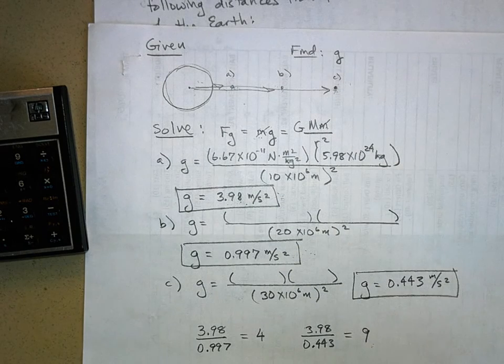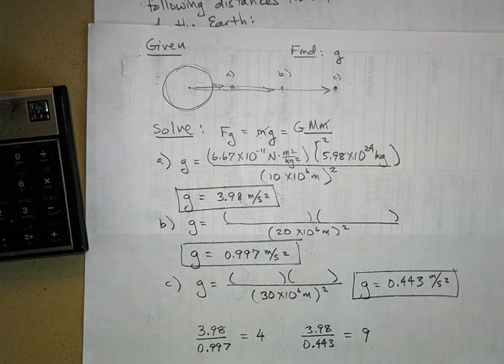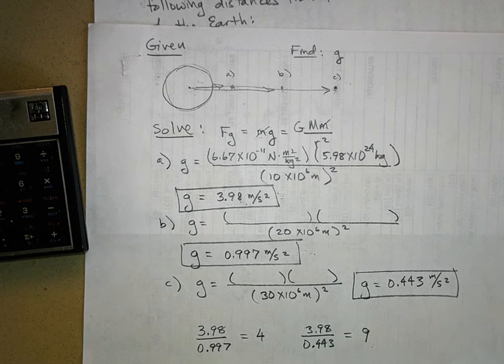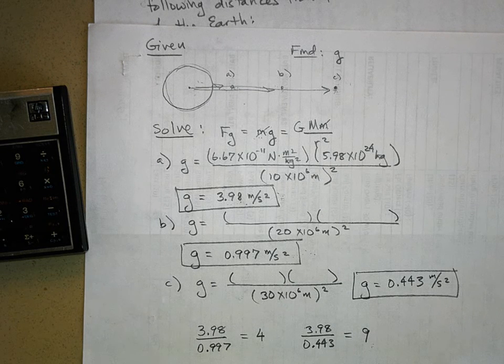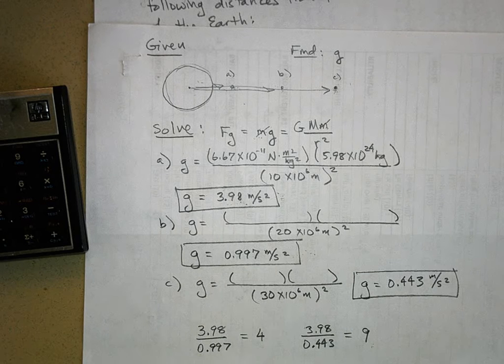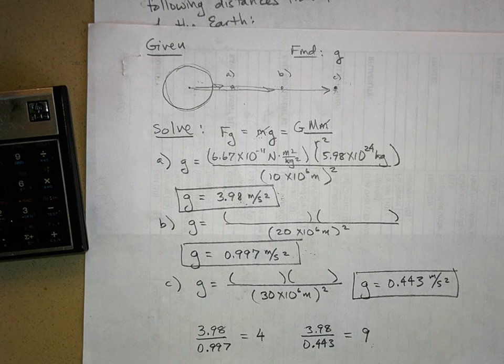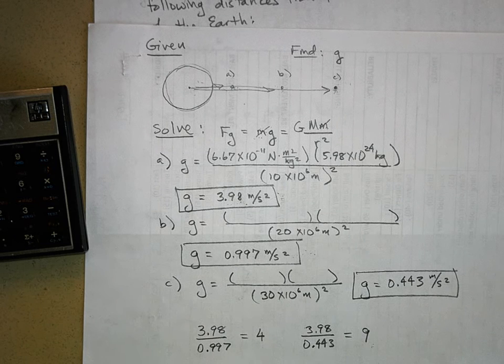This problem illustrates the fact that gravity gets weaker by the square of the distance. If you're twice as far away, you have one-fourth the gravity. Three times as far away, one-ninth of gravity. So it gets weaker very fast. Like if you're 10 times as far away, one one-hundredth the gravity.